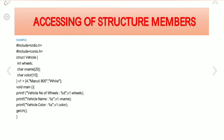In the main function, we use printf to display the vehicle details. V1.wheels prints the number of wheels, which is 4. V1.vname prints the vehicle name, which is Maruti 800. V1.color prints the color, which is white. These values are accessed and displayed on the screen using the dot operator.